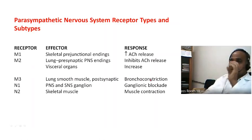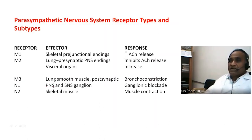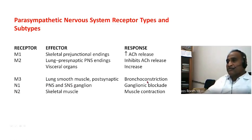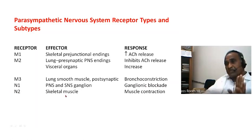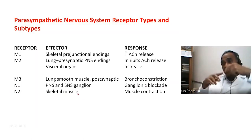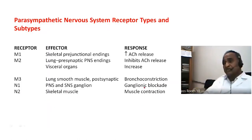The peripheral parasympathetic and sympathetic nervous system ganglia have N1 receptors producing ganglionic responses. N2 receptors are present in the neuromuscular junction.